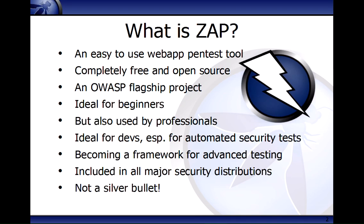What is ZAP? ZAP is an easy-to-use tool for finding vulnerabilities in web applications. It is completely free and open source, and it's an OWASP flagship project — one of about 20 flagship projects. These are the most mature projects that OWASP really recommends you get started with first, and they're a great introduction to application security. It's ideal for people new to application security, but it's also used a lot by professionals — probably more by professional pen testers than developers. I want to make sure it's ideal for developers, particularly for automated security testing. It really is becoming a framework for advanced testing, and it's included in all the major security distributions. Any of you involved in application security for any length of time will know there are no silver bullets — ZAP definitely isn't one. It's part of how you can secure applications, but definitely not the be-all and end-all.